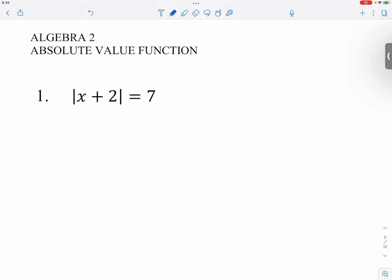Let's look at number one. Now what's going on with number one here is we have absolute value of x plus two equal to seven.